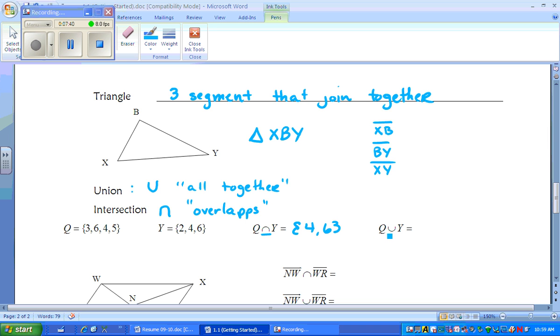In the next example, Q union Y. Union meant all together, so you have to put all the numbers together. You do not have to repeat any of the numbers. So in this case, there's a 2, there's a 3, there's a 4, a 5, and a 6 to make the set.